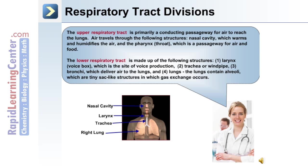The lower respiratory tract is made up of the following structures: the larynx, which is the site of voice production; the trachea or windpipe; the bronchi, which deliver air to the lungs; and the lungs themselves. The lungs contain alveoli, which are tiny sac-like structures inside of which gas exchange takes place.